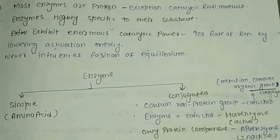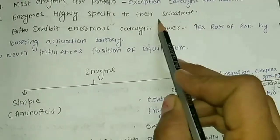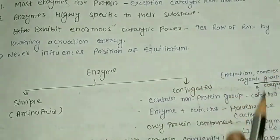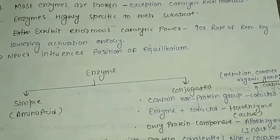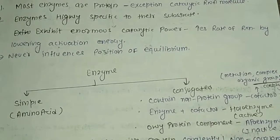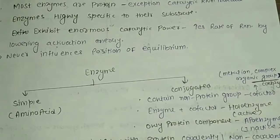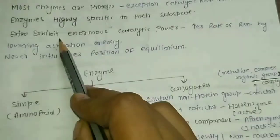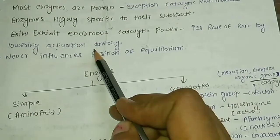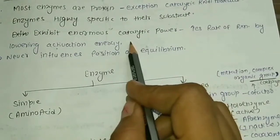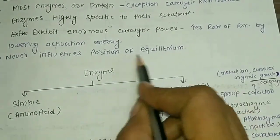The second property is that enzymes are highly specific to the substrate. Our enzyme-substrate interaction is described by the lock-and-key method — they bind the substrate very specifically. Third, enzymes exhibit enormous catalytic power, increasing the rate of reactions by lowering the activation energy, and they never influence the position of equilibrium.